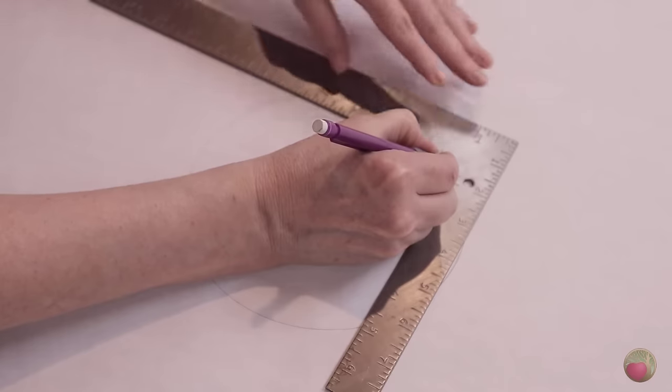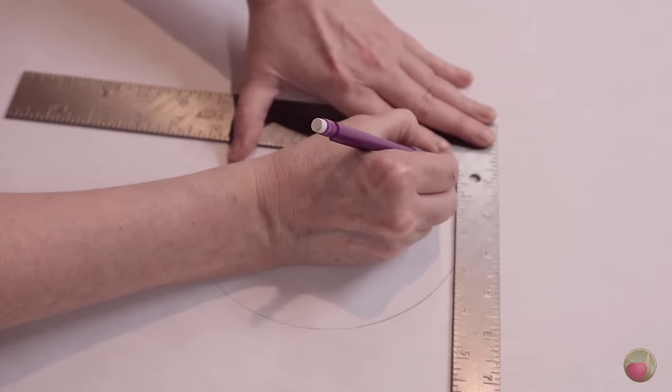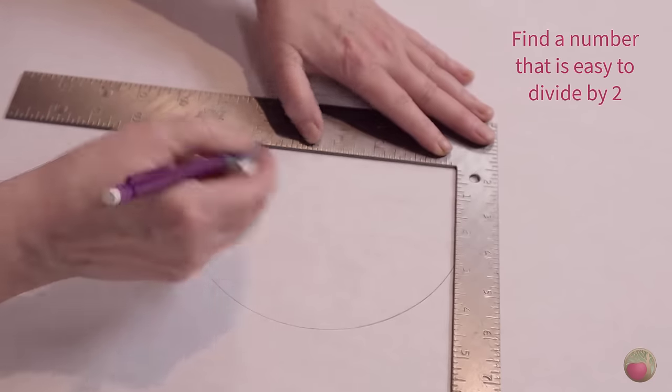Here, right into that point, and then I'm going to gently spin this thing around until it hits another point on the circle of something that's easy for me to divide by two. This just happens to be six for me. That's super easy to divide.